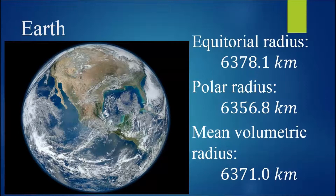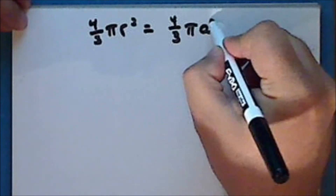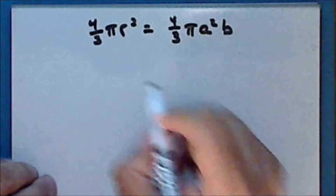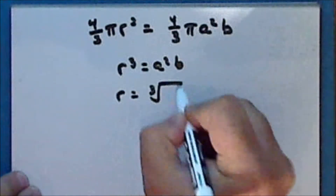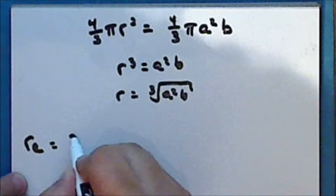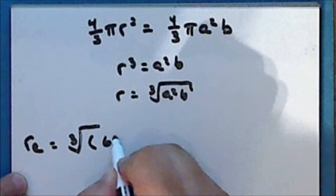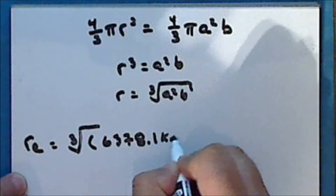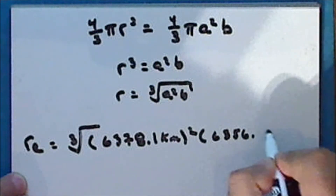So let's calculate the mean volumetric radius of the Earth. We want to determine the uniform radius r that gives the same volume as the oblate spheroid with equatorial radius a and polar radius b. So we have r cubed is equal to a squared b, so that r is the cubed root of a squared b. The mean volumetric radius of the Earth is the cubed root of the equatorial radius squared, which is 6,378.1 kilometers, times the polar radius, which is 6,356.8 kilometers.